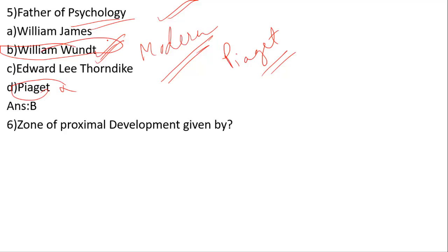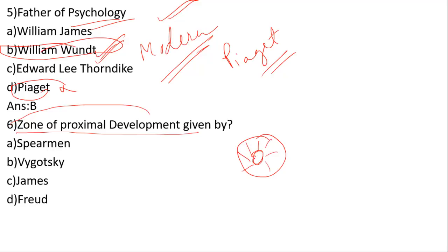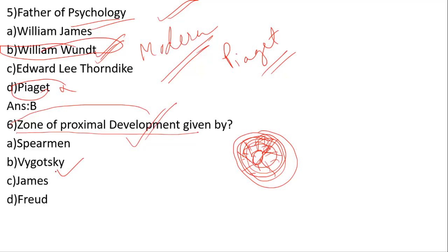The zone of proximal development was given by Vygotsky. This zone refers to the support from friends, peer groups, parents, and teachers that helps a child develop. The correct answer is option B — Vygotsky gave the concept of zone of proximal development.